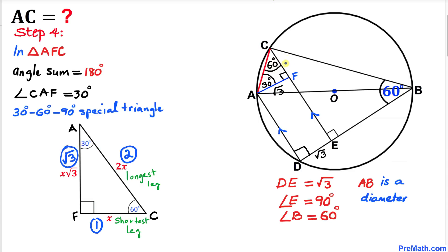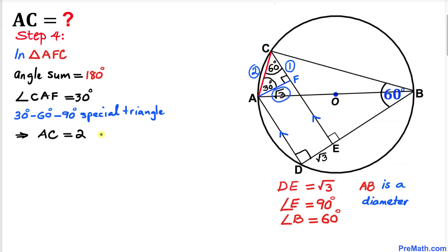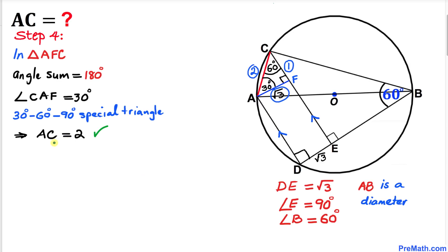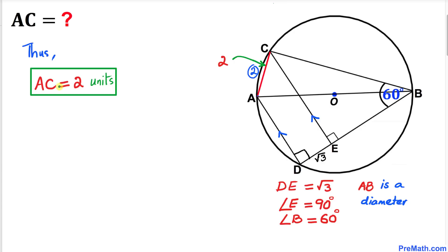Therefore, side length CF is 1, side length AC is 2, and side length AF is square root of 3. So we conclude that side length AC turns out to be 2 units — that's our final answer. Thanks for watching, and please don't forget to subscribe to my channel for more exciting videos.